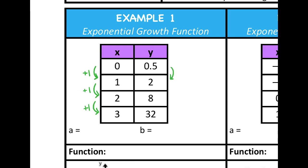Now for the change in y, to get from 0.5 to 2 we'd have to add 1.5, to get from 2 to 8 we'd have to add 6, and to get from 8 to 32 we'd have to add 24. So just doing that, we see that there's no constant rate of change, so this is obviously not a linear function. That means we need to explore the option of it being an exponential function.